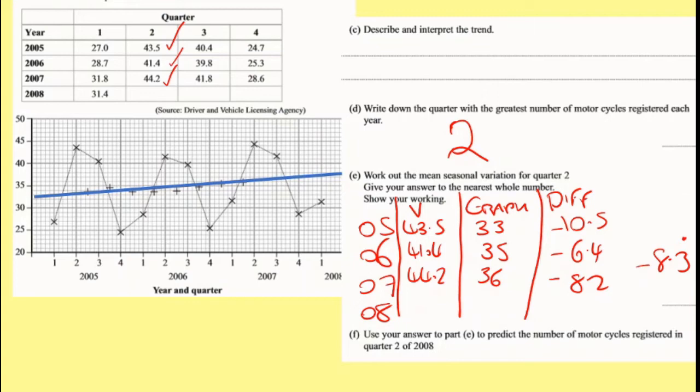Now use your answer in part C to predict the number of motorcycles registered in quarter 2 of 2008. And it's nice because now I've got my little graph here. So what I'm going to do is I'm going to read off the graph where I think it should be. So my 2008 just fits right here actually. If I read all the way across, 35, 36, 37. So I reckon this is actually going to be 37. Now I estimate my difference is going to be minus 8.3 recurring. So what I need to do now is I need to do 37 plus 8.3. And I reckon this one here should really be 45.3. So my answer here is 45.3, and remember it's in thousands, so you could put 45,300.